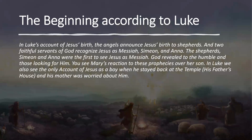In Luke's account of Jesus' birth, the angels announced Jesus' birth to the shepherds, and two faithful servants of God recognized Jesus as Messiah — Simeon and Anna. So the shepherds, Simeon, and Anna were the first to see Jesus as Messiah other than Joseph and Mary. God revealed to the humble and those looking for him. You see Mary's reaction to these prophecies over her son. In Luke, we also see the only account of Jesus as a boy, when he stayed at the temple — his father's house — and his mother was worried about him. We see how God chose people we would consider small, people that were humble, those who didn't have higher education or higher status, and chose them to reveal the Messiah to first.